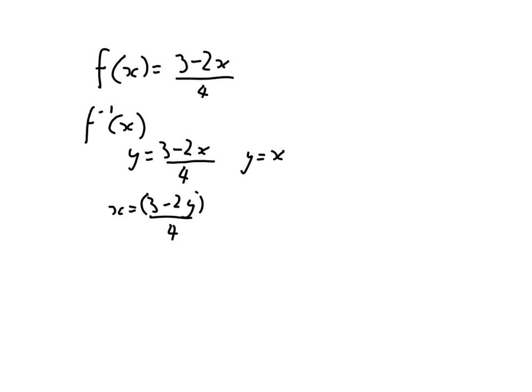So I multiply by 4, so 4x equals 3 minus 2y. Now I've got 3 take 2y. I've got to get rid of that 3, so I take away 3 from both sides. So 4x take 3 equals negative 2y.